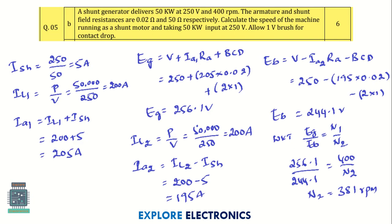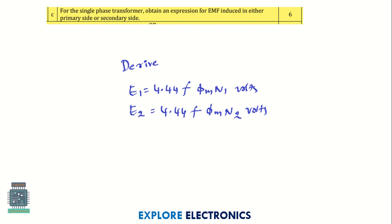There are five important components, so you need to write at least two to three lines of explanation for each. Then question 5B is a problem on a shunt generator, where we need to find out the speed of the machine running as a shunt motor taking 50 kilowatt input at 250 volts. You can see the solution here.